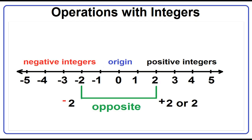Operations with integers. Integers are also called signed numbers. A number is positive if it is greater than 0. A number is negative if it is less than 0. Zero is neither positive nor negative.